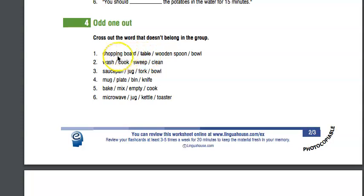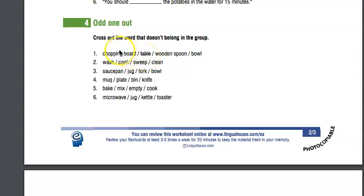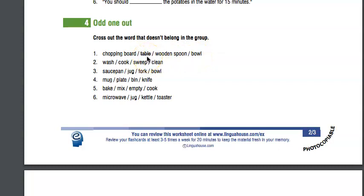Let's have a look. This one is: chopping board, table, wooden spoon, and bowl. Now, table is crossed out because everything else is equipment that we use in the kitchen. Table is not really kitchen equipment.